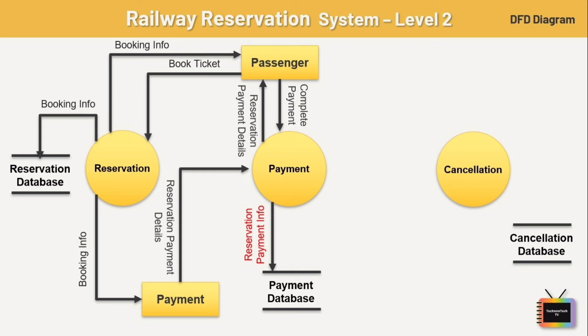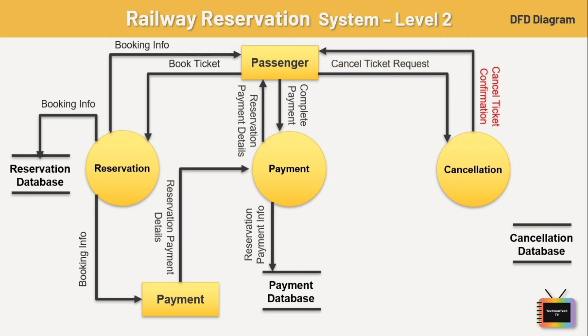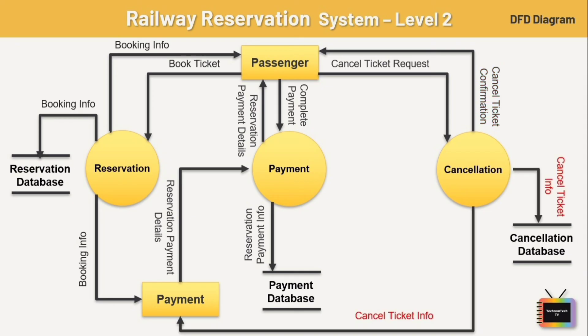Similarly for ticket cancellation — the passenger sends a cancel request, the cancellation process processes it and sends confirmation to the passenger. The cancellation details are stored in the cancellation database and also sent to the payment entity. Once the payment process receives the cancelled ticket information, it initiates a refund — the refund amount is sent to the passenger and this information is also stored in the payment database.